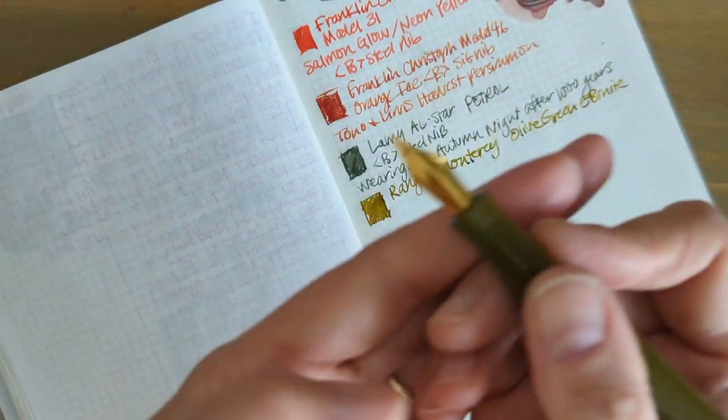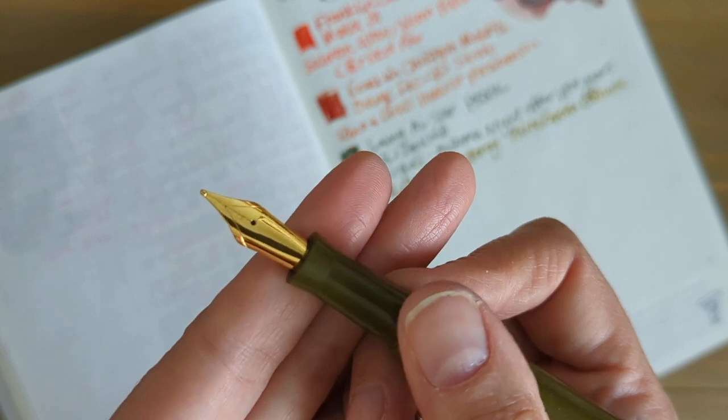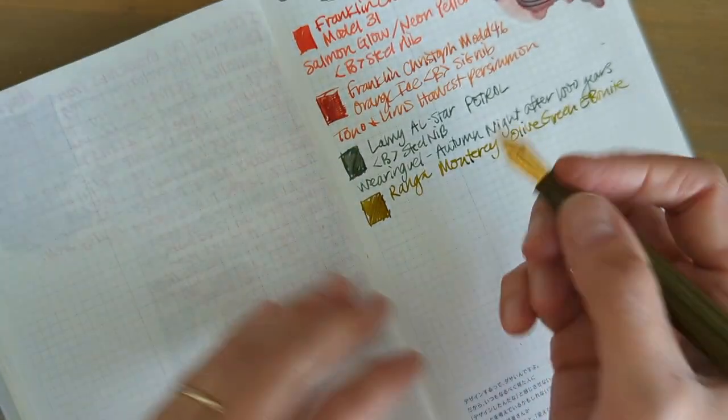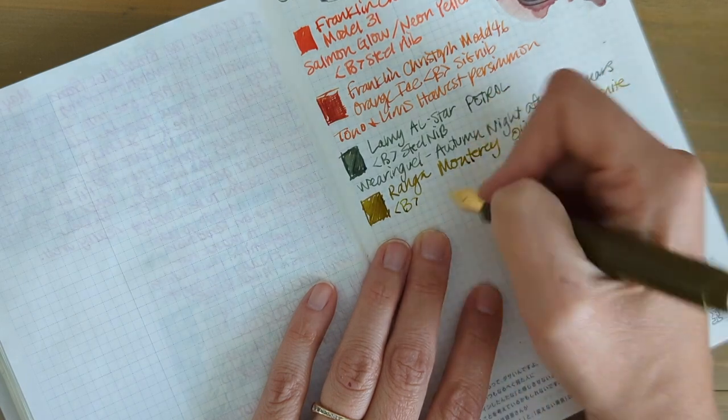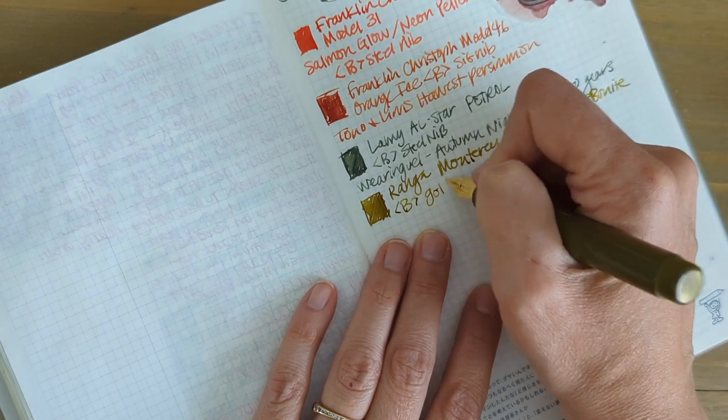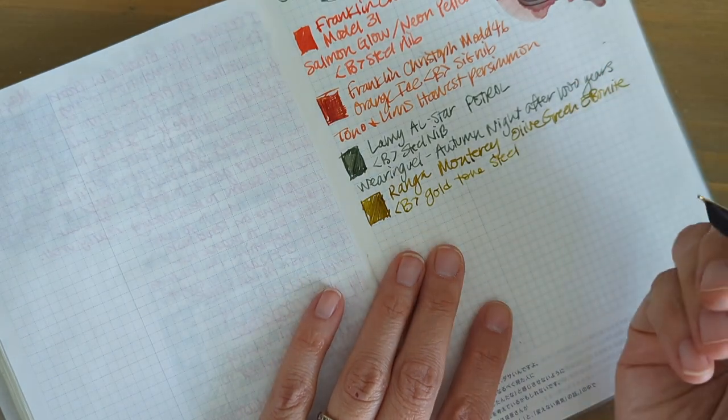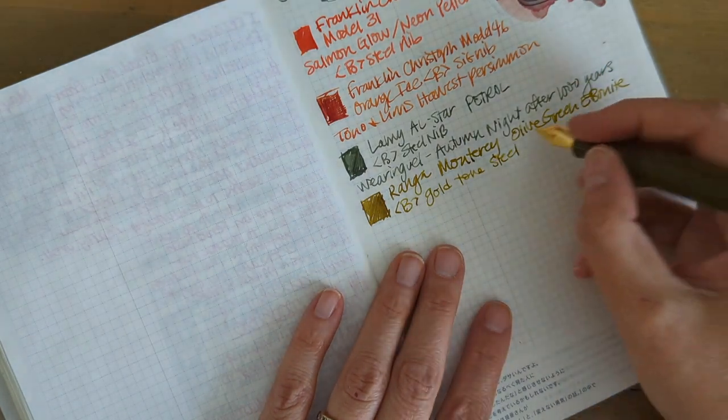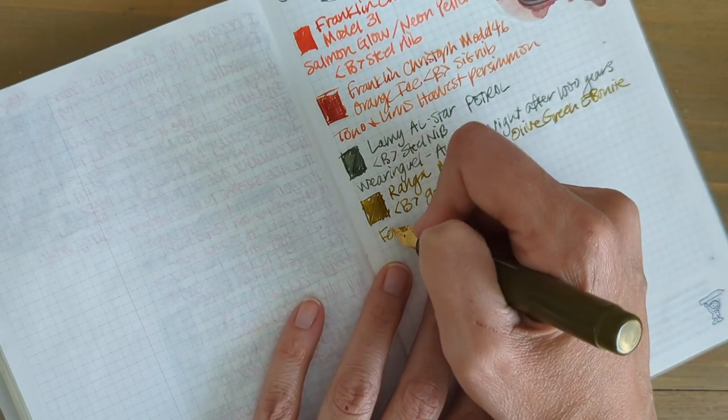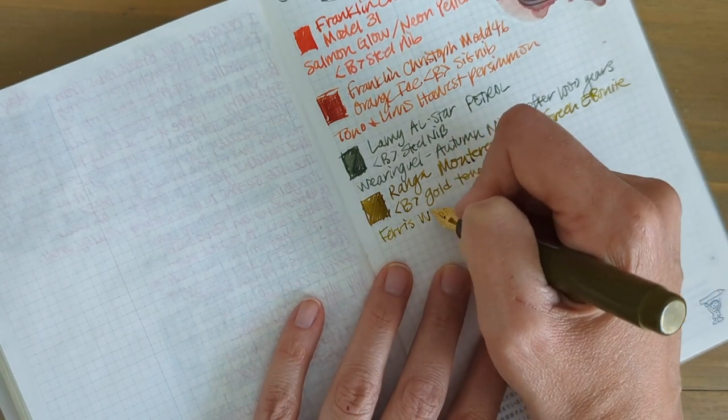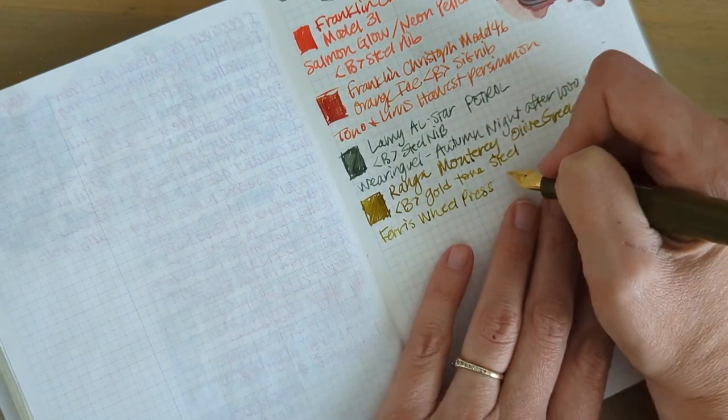It has a gold colored steel nib. There's nothing on the nib, not even the size. It is still a little bit feedbacky. I have this inked with Ferris Wheel Press. It's got a little bit of a green color, Goose Poupon.